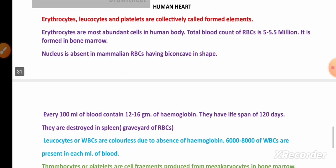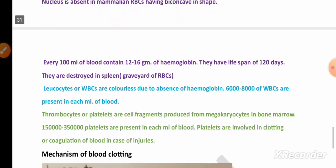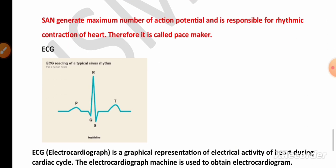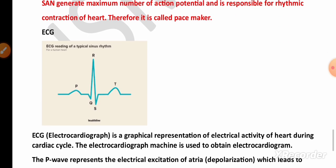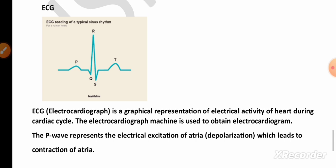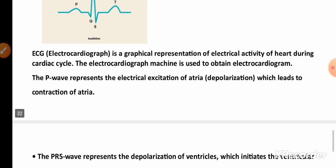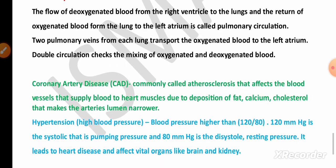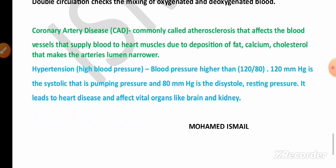From Body Fluids and Circulation, the heart diagram is very important for five marks. They may also ask about the characteristics of erythrocytes, leukocytes, and platelets, and the mechanism of blood clotting. Remember the SA node as a pacemaker, and the ECG graph and its explanation. Double circulation — systemic and pulmonary — is also a five-mark question.